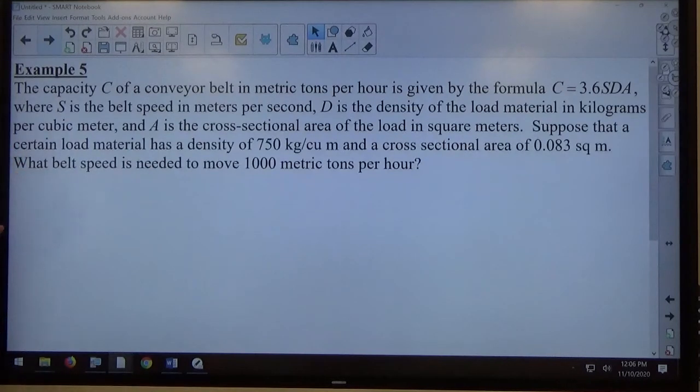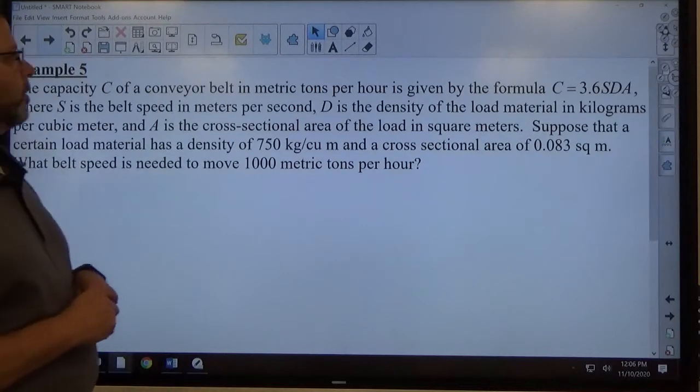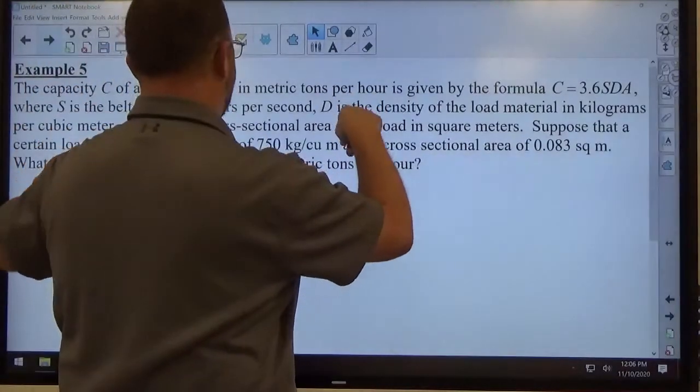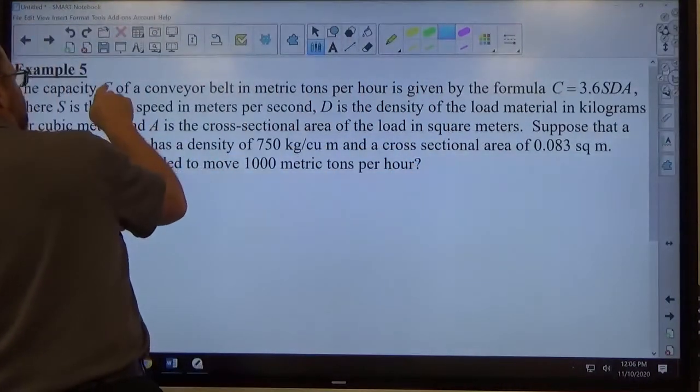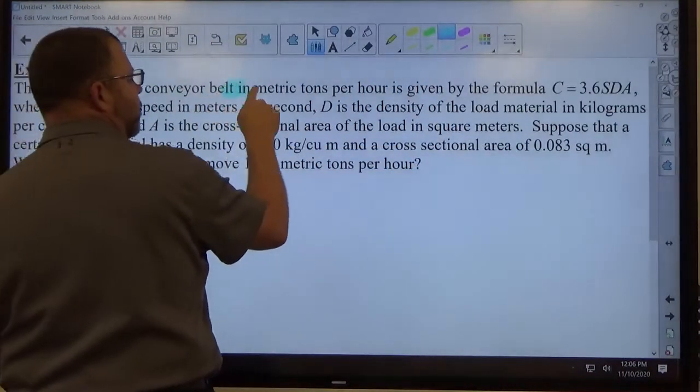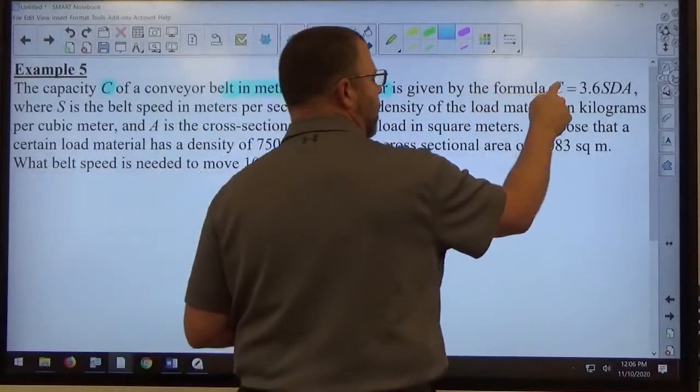So there's a whole lot of information embedded in those first two sentences there, or just one full sentence with a comma, but C in metric tons per hour, that's what C is.